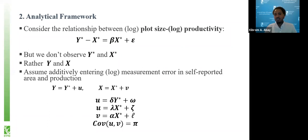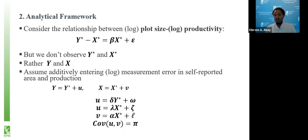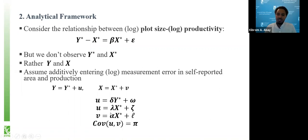Consider a simple relationship between yield and plot size. We have log of yield and log of plot size — a simple log-log relationship. We don't observe the true values of yield and plot size; rather, we observe mismeasured values. To analytically show the implication of this mismeasurement, we impose standard assumptions — for instance, that measurement error enters additively — and we also impose some structure on the nature of measurement error. The measurement error is non-classical: it is correlated with the true value of yield, measurement error in plot size is correlated with the true value of plot size, and these measurement errors are correlated with each other.